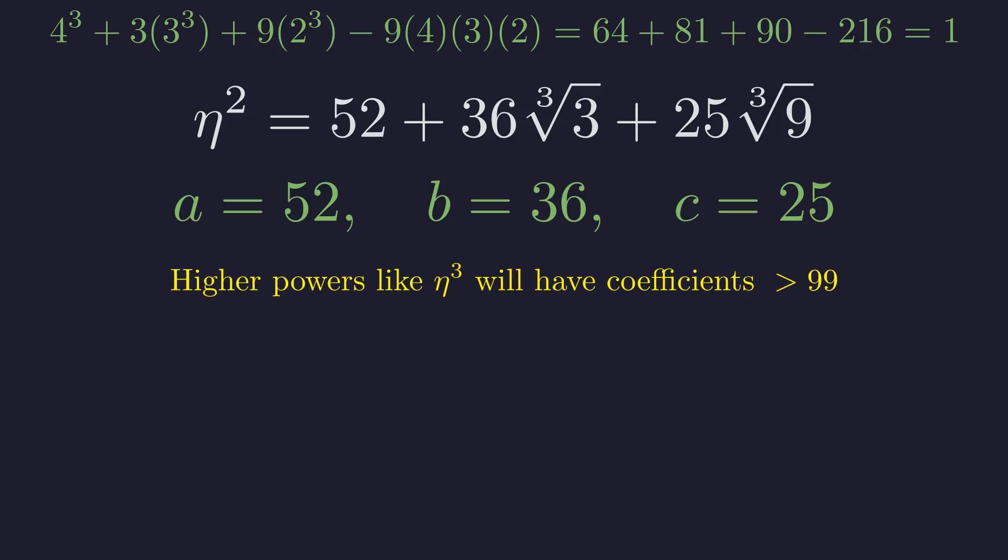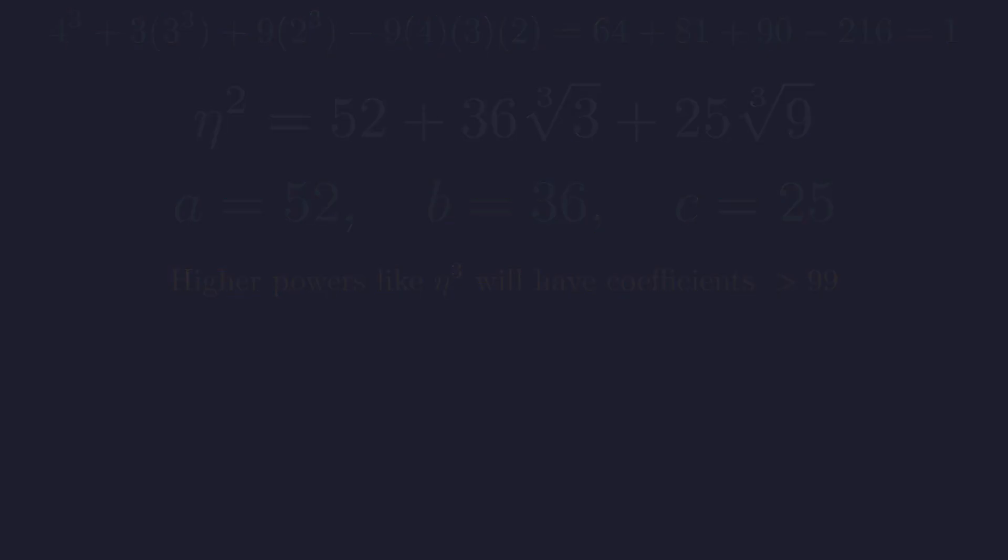To confirm this is the unique solution, we observe that because all coefficients of eta are positive, the coefficients of eta cubed and higher powers will be strictly larger, quickly exceeding 99. Therefore, our solution is unique. All that remains is to compute the required sum. We sum our values for a, b, and c. 52 plus 36 plus 25. The sum is 113.